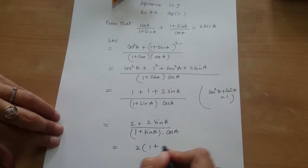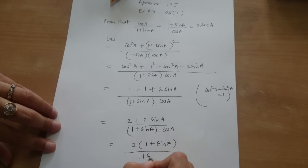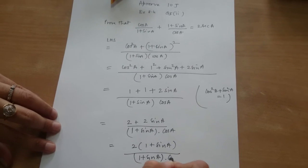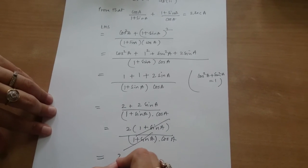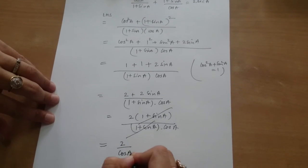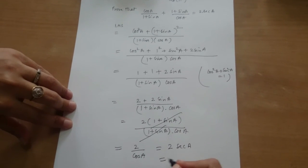So 1 plus sin A gets cancelled. So we are left with 2 upon cos A which is equal to 2 secant A and this is equal to RHS.